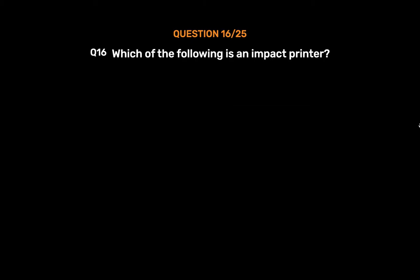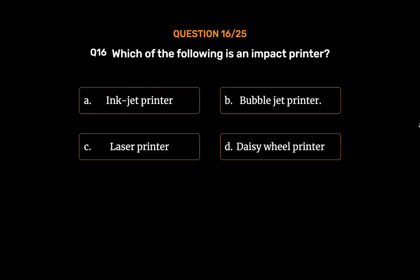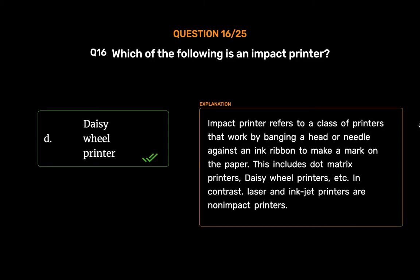Question No. 16. Which of the following is an impact printer? Option A. Inkjet printer. Option B. Bubblejet printer. Option C. Laser printer. Option D. Daisy wheel printer. The correct answer is Option D, Daisy wheel printer. Impact printer refers to a class of printers that work by banging a head or needle against an ink ribbon to make a mark on the paper. This includes dot matrix printers, daisy wheel printers, etc. In contrast, laser and inkjet printers are non-impact printers.